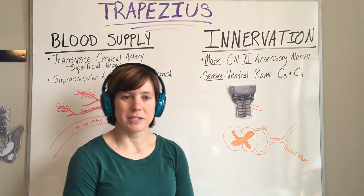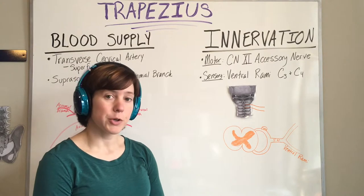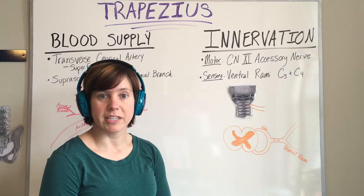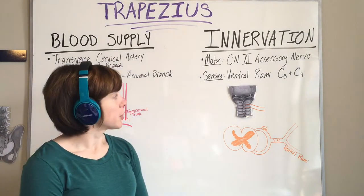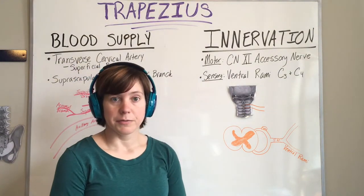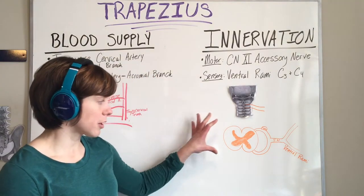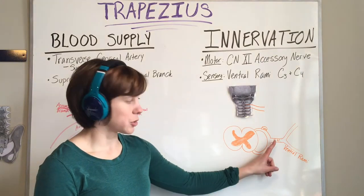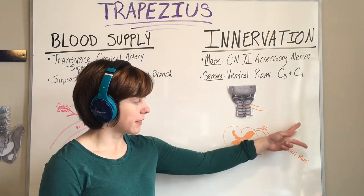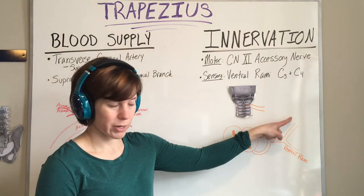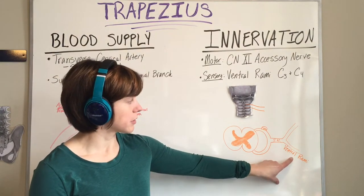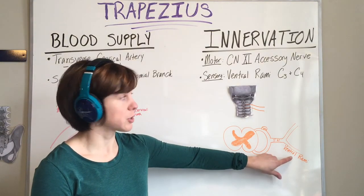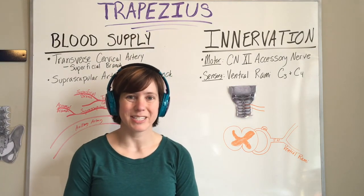The innervation for the trapezius has two components, motor and sensory. The motor component is from cranial nerve 11, which is the accessory nerve. The sensory component is the ventral rami of C3 and C4. We have our dorsal root and our ventral root that joins at the spinal nerve and then splits to the dorsal rami and the ventral rami. So at the levels of cervical vertebrae 3 and 4, this ventral rami applies innervation to the trapezius muscle.